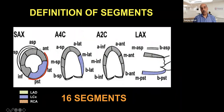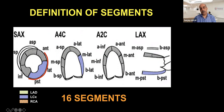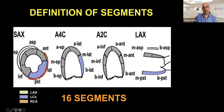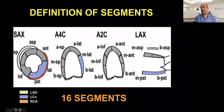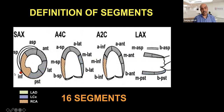The circumflex comes out as another branch from the left main and goes into the AV groove from the anterior to posterior side, sometimes giving rise to the posterior descending artery. As it goes into the AV groove, it gives rise to obtuse marginals: early OMs supply the lateral wall, and later OMs supply the posterior wall. The lateral wall segments seen in the four-chamber view, and the posterior wall (basal and mid posterior) seen in the long axis view, are supplied by the circumflex territory.